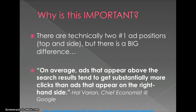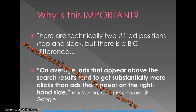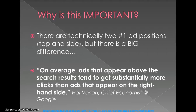So why is this important? There are technically two number one ad positions. There's the number one on top, and there's the number four — number one over on the side. Both can be beneficial, and previously people were using ad position targeting and bidding to actual ad placements, but Google got rid of that, and people are saying this is the answer as to how you can still do that in a more reportable way.